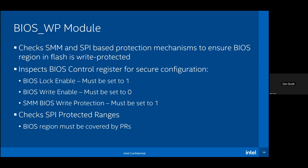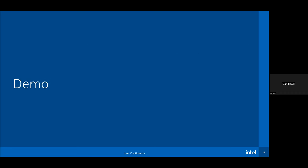Historically, manufacturers weren't following Intel guidelines and weren't ensuring that BIOS Write Protection bits were set to lock, leaving these vulnerabilities exposed. In response, the Chipsec team created a module called BIOS Write Protection. It checks the SMM and SPI-based protection mechanisms to verify the BIOS region is write-protected. The module inspects the BIOS control register for lock enable (must be set), write enable (must be unset), and write protection (must be set), and also verifies the SPI protected ranges cover the BIOS region's address range.